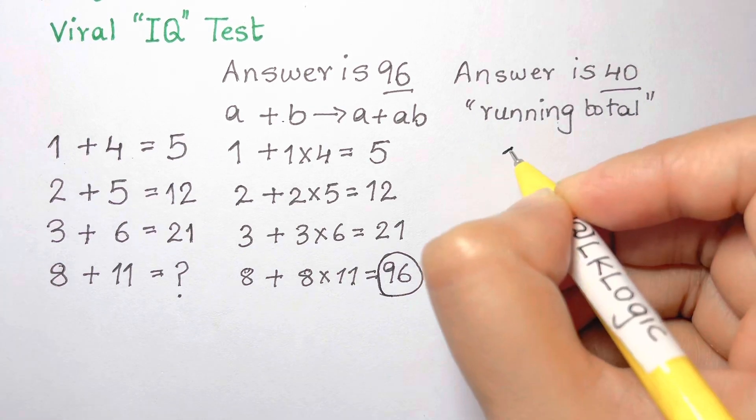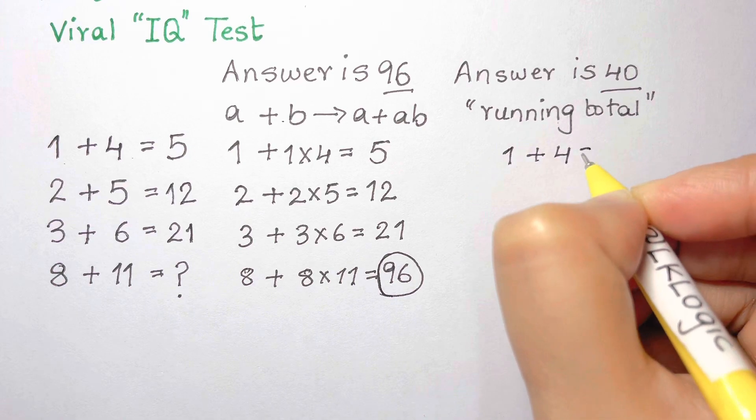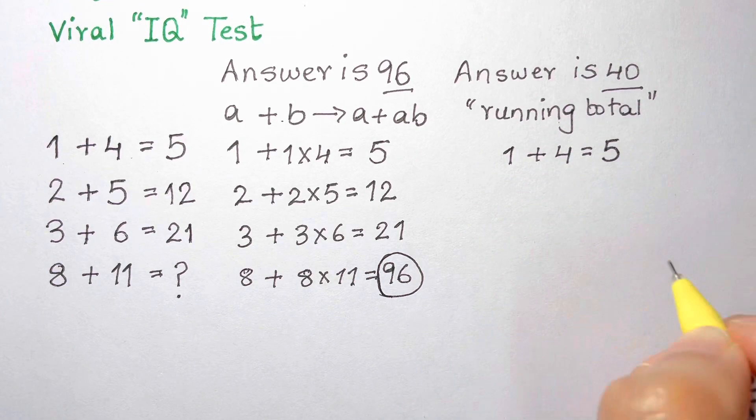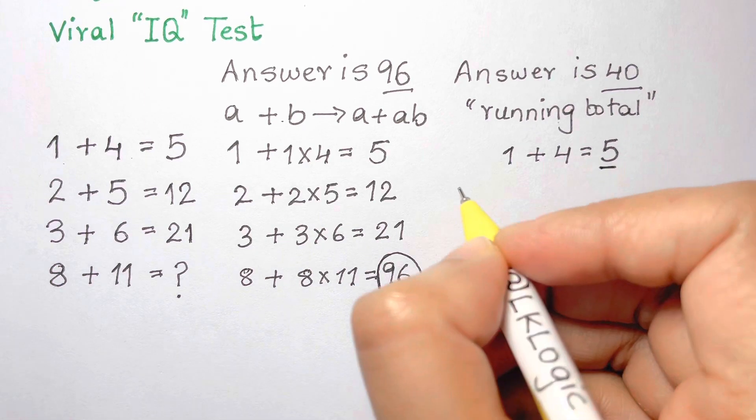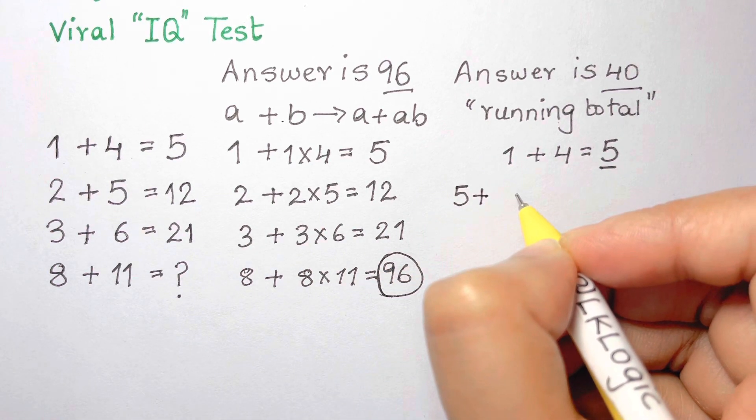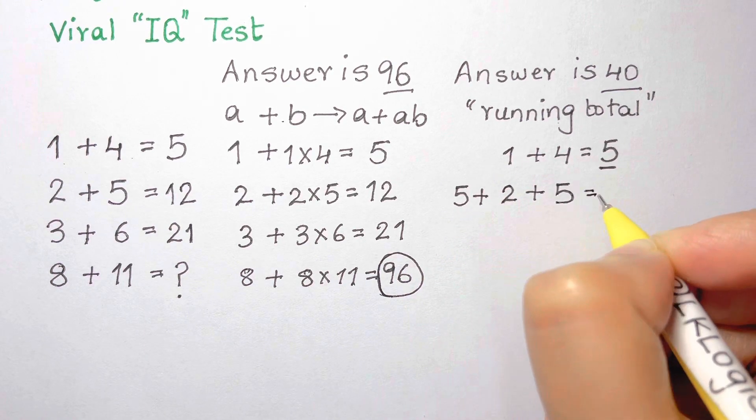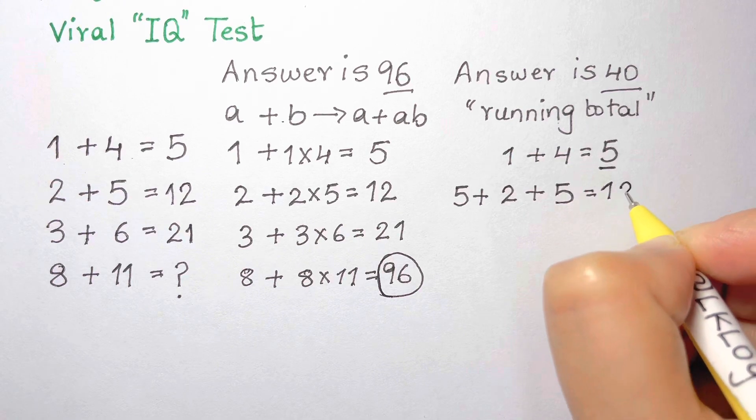So the first line of 1 plus 4 equals 5 is a correct mathematical result. In the next line where you have 2 plus 5, you should preface that by adding the result of 5 from the previous line. When we add 5 to 2 plus 5, we get the answer of 12, and that matches what is given in the original problem.